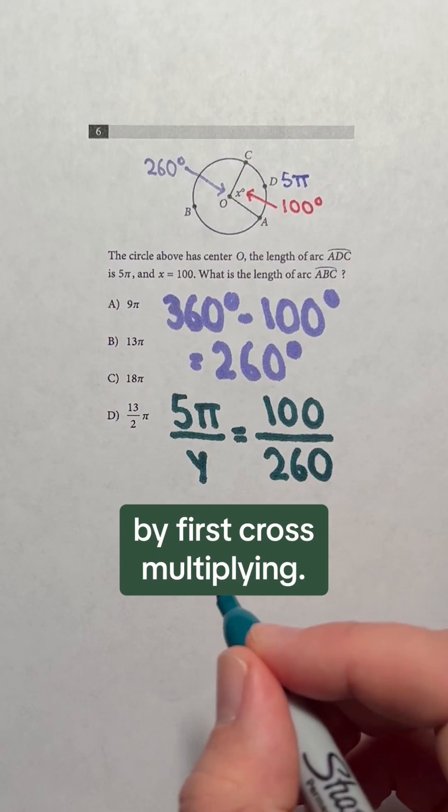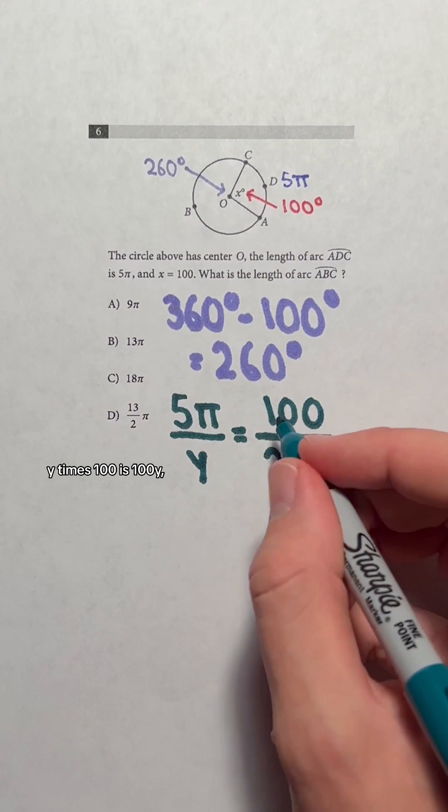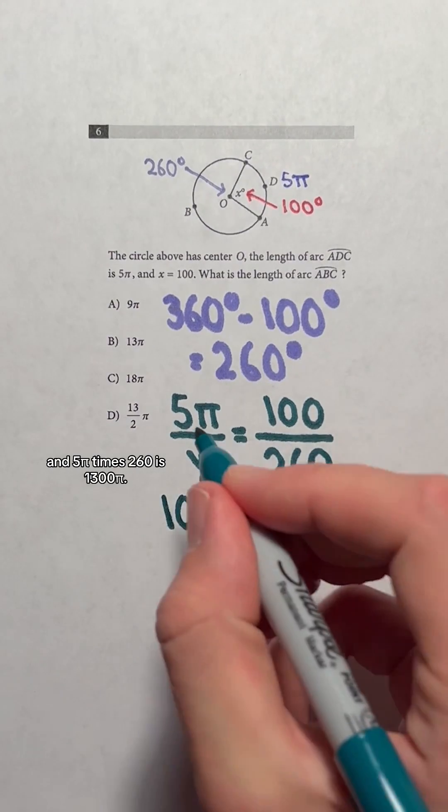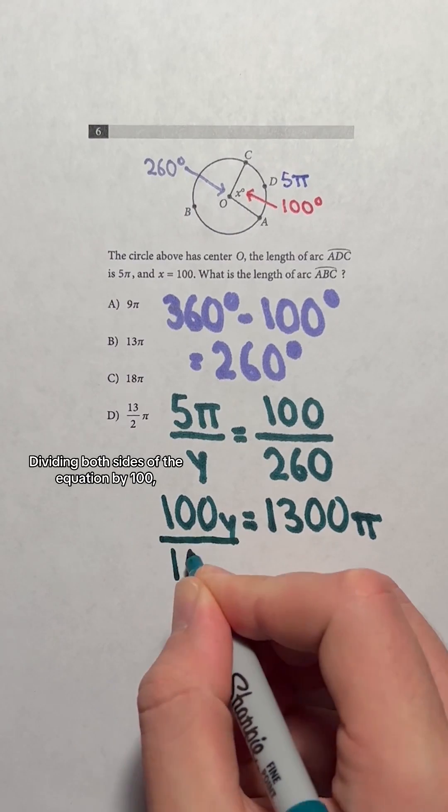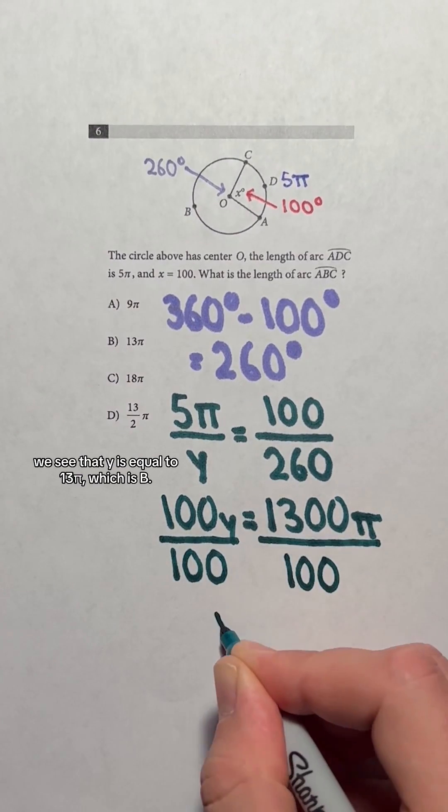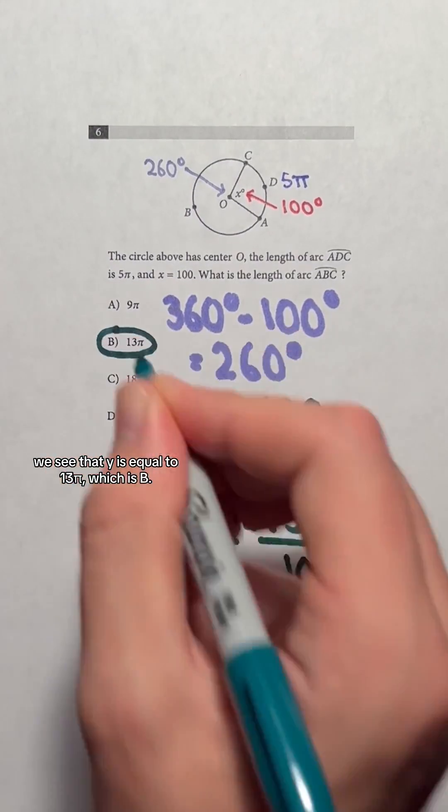Now we will solve for y by first cross multiplying. y times 100 is 100y and 5π times 260 is 1300π. Dividing both sides of the equation by 100, we see that y is equal to 13π, which is answer choice B.